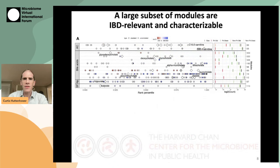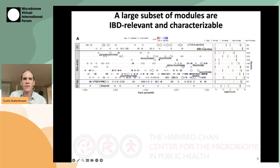If we zoom into some of these IBD-associated modules, there's a subset that contain compounds previously associated with inflammation. Each row in this visualization is a breakout of a single module, looking at the top hits of prioritized compounds within that module. These show things like carnitines, bile acid derivatives, short chain fatty acids, or hippurate, all of which have been IBD-associated in previous studies, along with small dots representing unannotated compounds that may be chemically related.